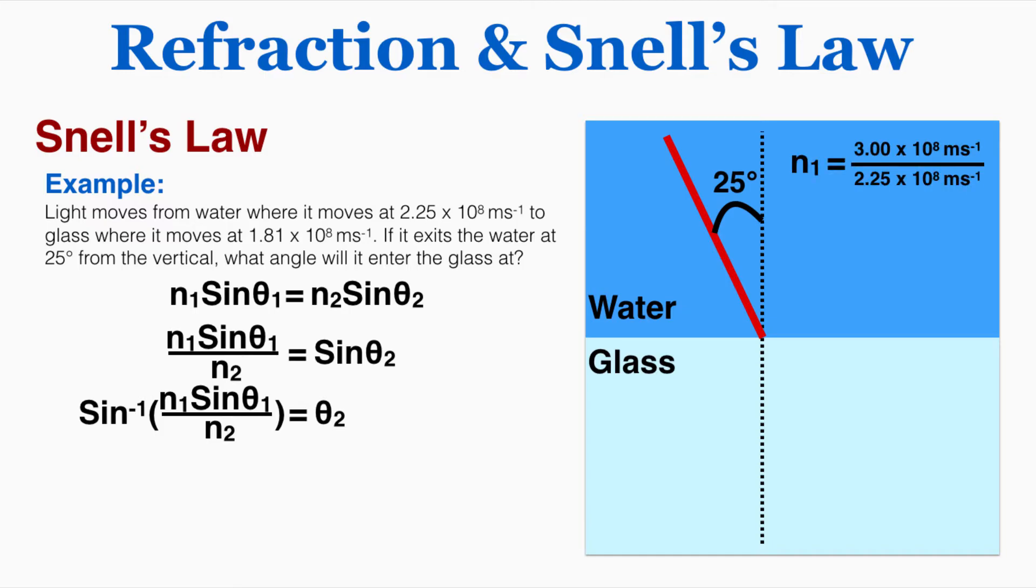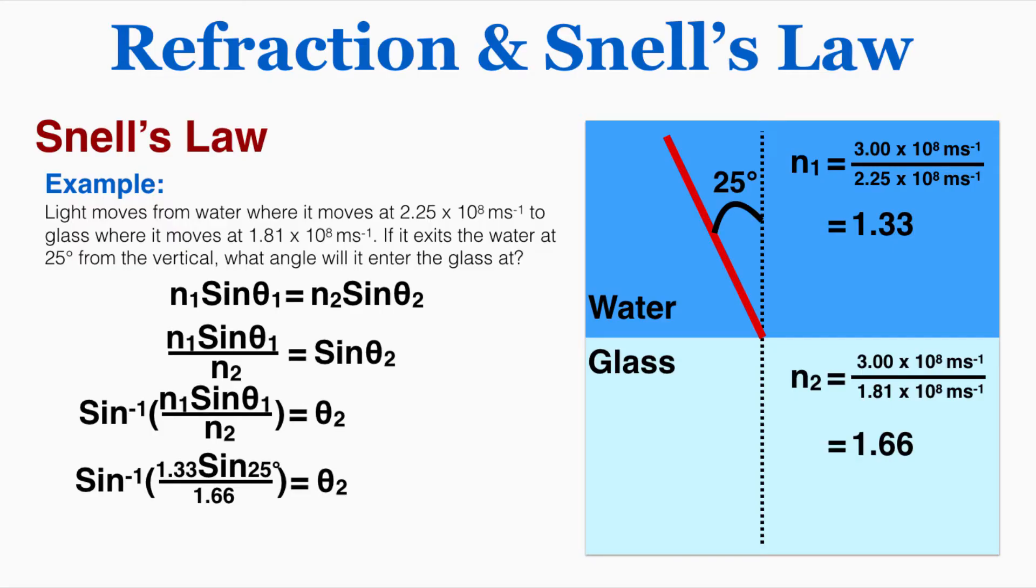And I know that the index of refraction in water is the speed of light in a vacuum, 3 times 10 to the 8th, over the speed of light in water, which is 2.25 times 10 to the 8th, which is equal to 1.33. And the index of refraction in glass is going to be 1.66 using that same rule. So I can now plug in these numbers into the index of refraction for each material, and I'm also plugging in the angle that it leaves material number 1, the water, at 25 degrees. And when I do that, I find that the new angle that it's going to enter the glass with is 19.9 degrees.